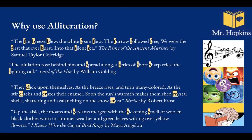Finally, from I Know Why the Caged Bird Sings by Maya Angelou: 'Up the aisle she moans and screams, merged with the sickening smell of woolen black clothes, worn in summer weather and green leaves wilting over yellow flowers.' The alliteration here really draws our attention to something in particular — the screams and the sickening smell. Alliteration can make us focus on certain elements in an excerpt or paragraph.